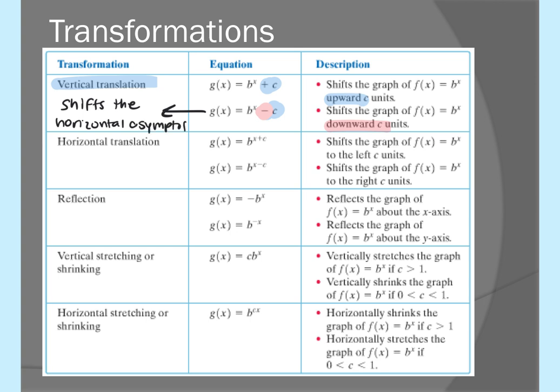If the original asymptote is at zero and you shift everything up two, the horizontal asymptote is now at y = 2. If you shift it down three, the asymptote moves to y = -3. The horizontal translation moves the graph left and right — it's the opposite direction of the sign: plus c in the exponent shifts left, minus c shifts right.